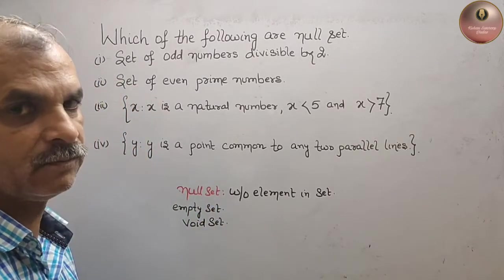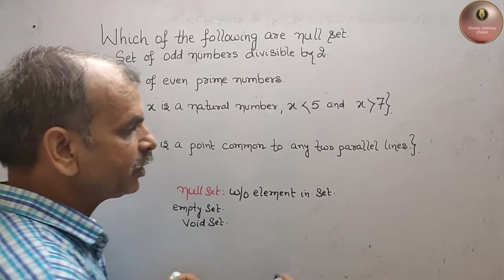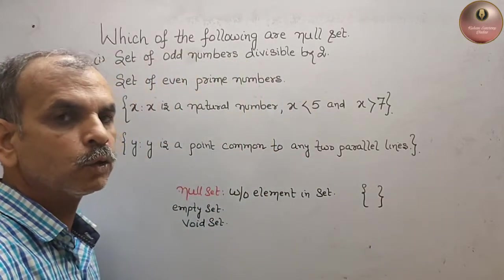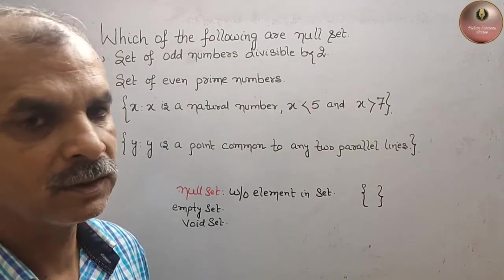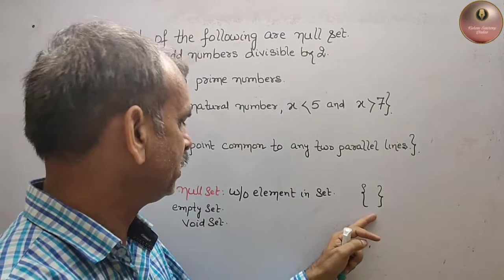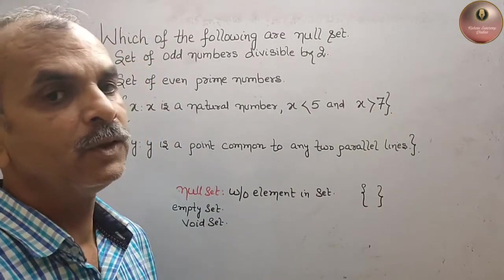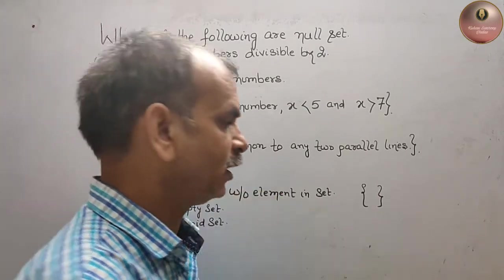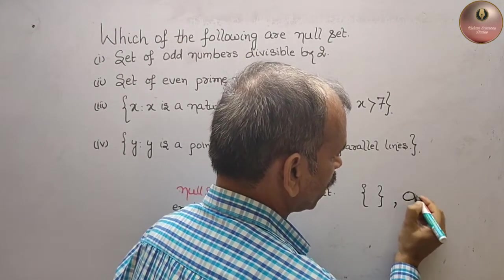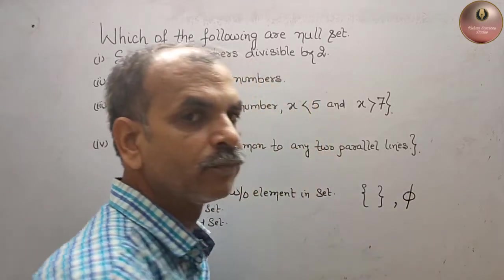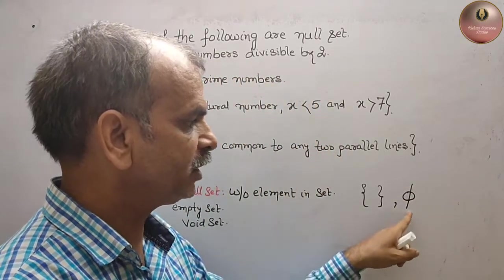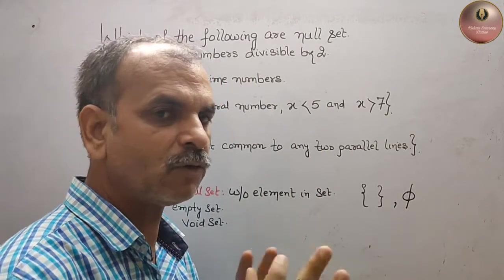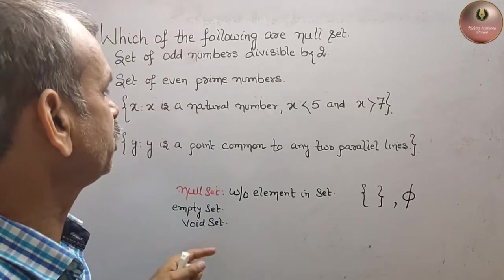The null sets, how they can be denoted? They can be denoted just like making two curly brackets. This is your null set, or you can give a symbol as phi. If you see this, you should know this is a null set, that means without any element.